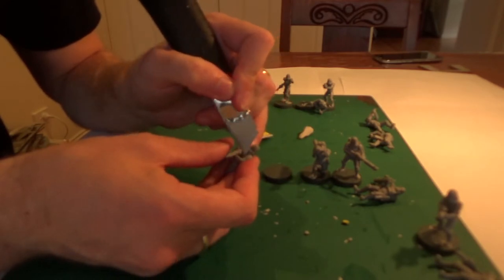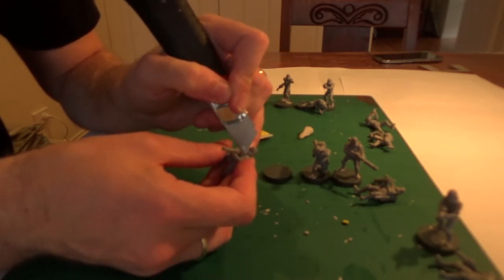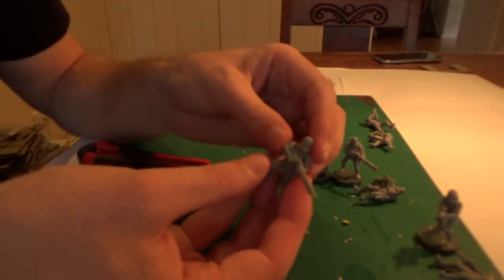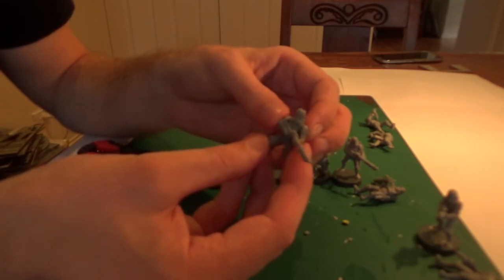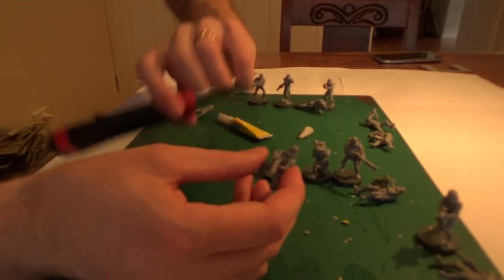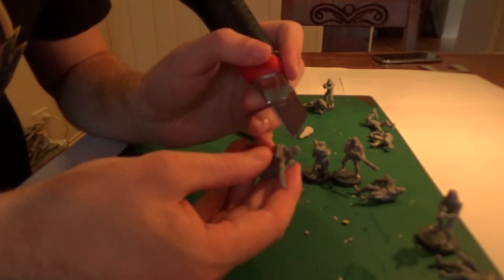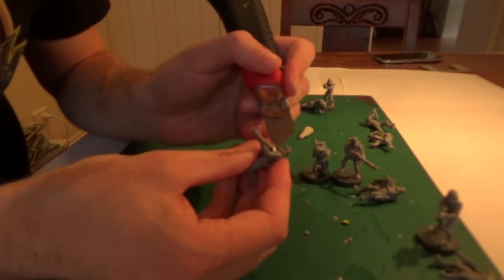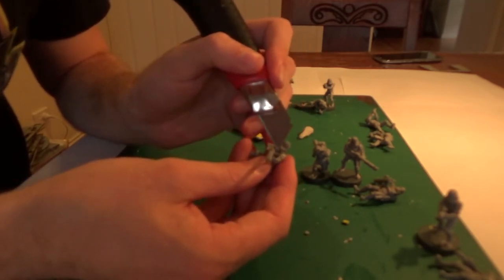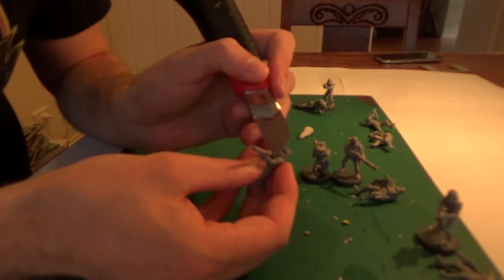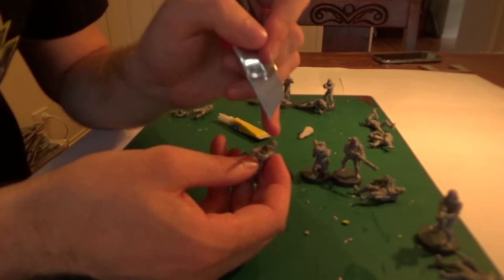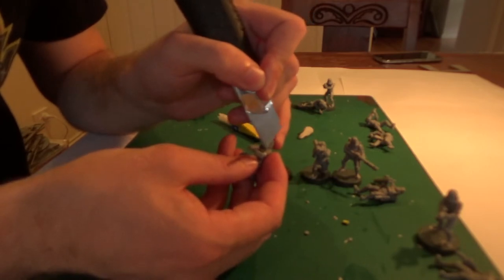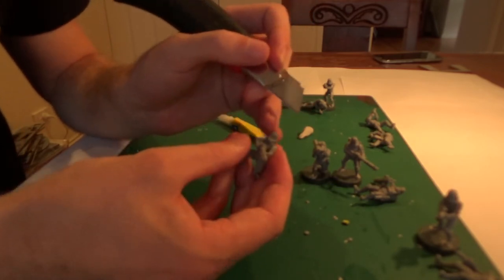Now you just want to push it in there just to fill the gap. Now using the flat edge of your knife, just squishing it down. Now you can see it's filled up his armor. And because you're holding your knife flat against the armor, it's squishing level with the armor.